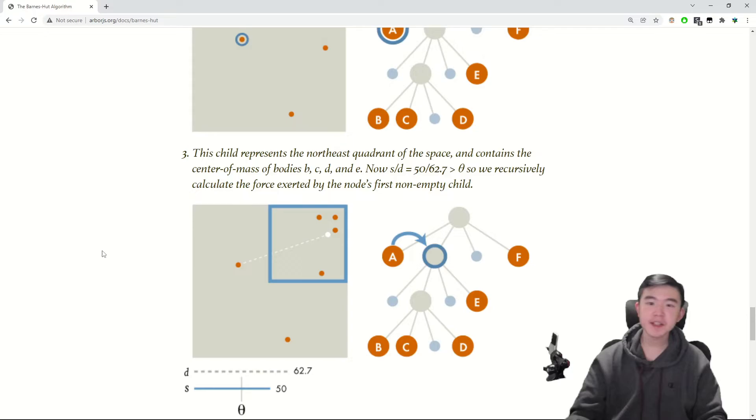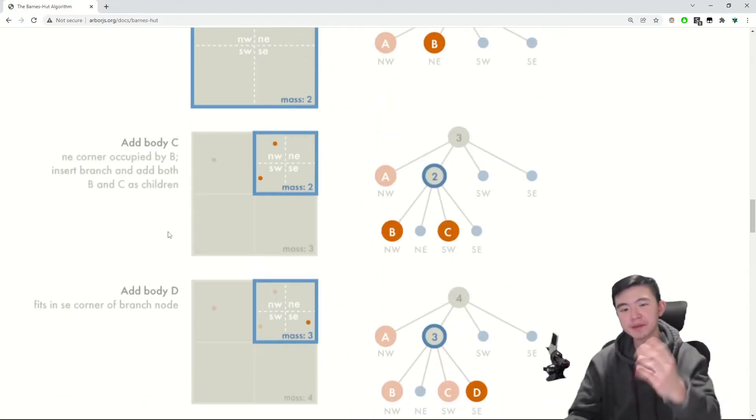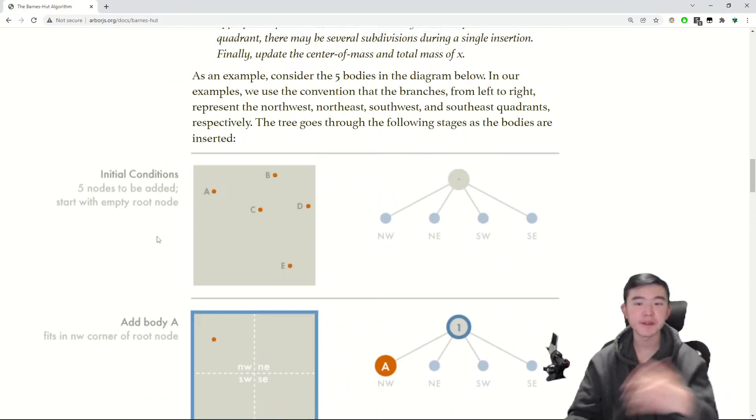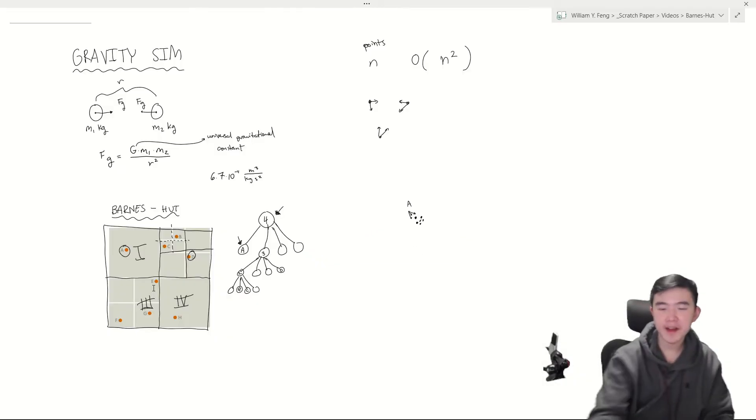I think that's all the important bits of the Barnes-Hut algorithm. The idea is we use a quad tree. We approximate several bodies as one body if they're far enough away. And yeah, that makes it a lot faster.